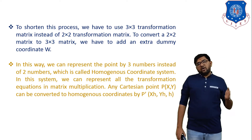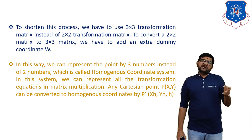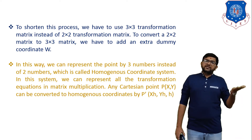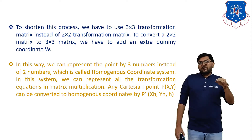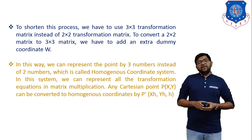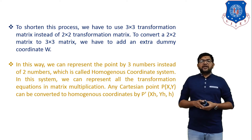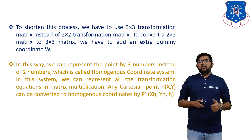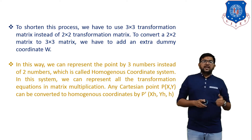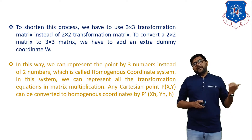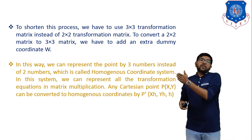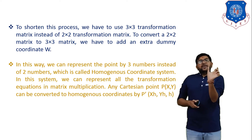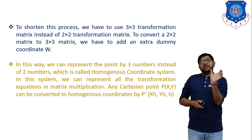We have to convert the 2×2 matrix into a 3×3 matrix, so for the conversion to a 3×3 matrix we add one dummy row and one dummy column. In this way we can represent a point by 3 numbers instead of two, which is called the homogeneous coordinate system. In this system we can represent all the translation equations in matrix multiplication. Any Cartesian point P(X, Y) can be converted to a homogeneous coordinate P'(X, Y, 1).